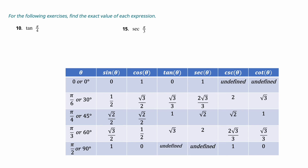For cotangent, apply the 90° flip to the tangent list: undefined, √3, 1, √3/3, 0. Secant is the reciprocal of cosine: 1/1 = 1; 2/√3 rationalized; reciprocal of √2/2 is √2; reciprocal of 1/2 is 2; and 1/0 is undefined. Cosecant follows the same 90° opposite pattern: undefined, 2, 2√3/3, √2, and 1.